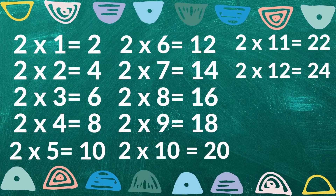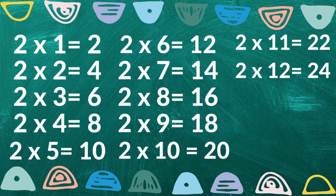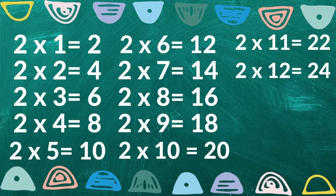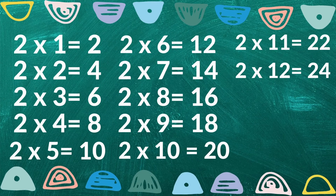Two times seven is fourteen, two times eight is sixteen, two times nine is eighteen, two times ten is twenty two, two times eleven is twenty two, two times twelve is twenty four.